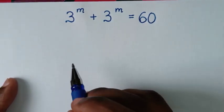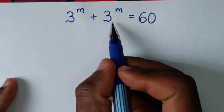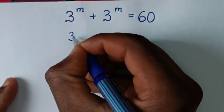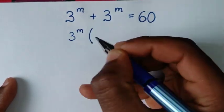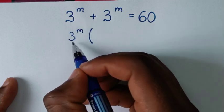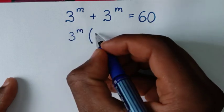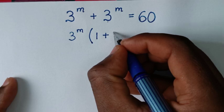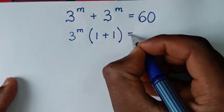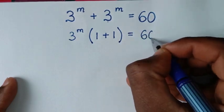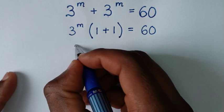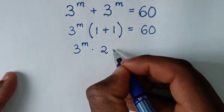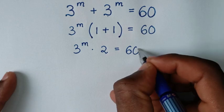For the solution, on the left side 3 power of m is common, so we take 3 power of m outside the bracket. Then 3 power of m divided by 3 power of m is 1, plus 3 power of m divided by 3 power of m is 1. So it becomes 3 power of m times (1 plus 1), which is 2, equal to 60.